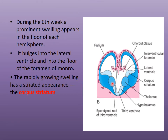During the sixth week of development of the cerebral vesicles, a swelling appears in the floor of each developing cerebral hemisphere. This swelling is close to the interventricular foramen — the foramen of Monro — has a striated appearance, and bulges into the cavity. This is the corpus striatum, which is a part of the gray matter of the cerebral cortex and appears in both cerebral hemispheres.